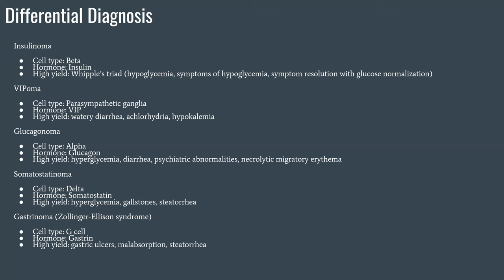Somatostatinoma is less commonly tested because it's fairly rare, but somatostatin is normally produced by delta cells in the pancreas. The high-yield findings are hyperglycemia, gallstones, and steatorrhea. This seems a little confusing at first glance — hyperglycemia may overlap with glucagonoma and steatorrhea may overlap with gastrinoma — so how do you tell them apart?